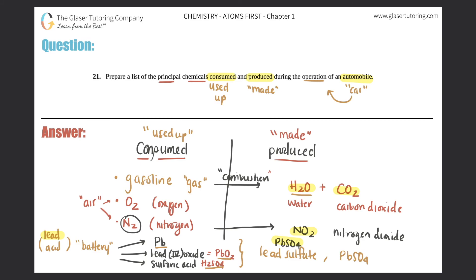So to summarize: six chemicals are on the consumed side and four on the produced side — that's the list of principal chemicals consumed and produced when an automobile is running. I hope this helped. If it did, click that subscribe button, and I'll see you on the next lesson. Have an awesome day!